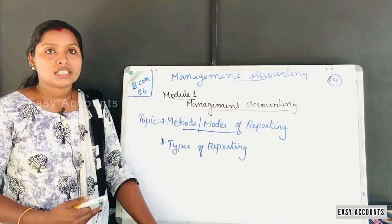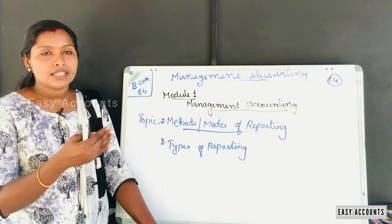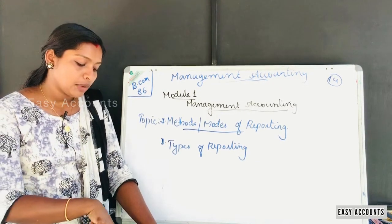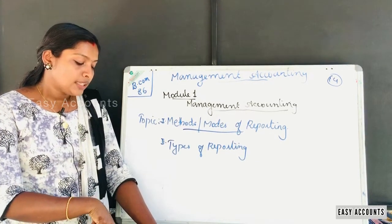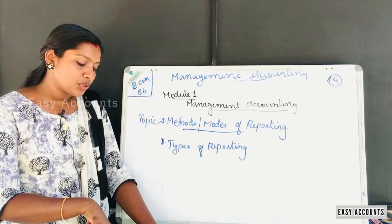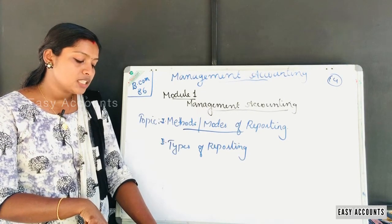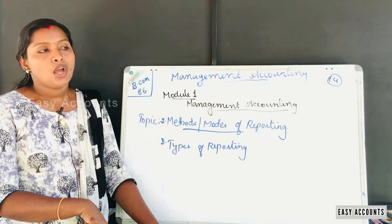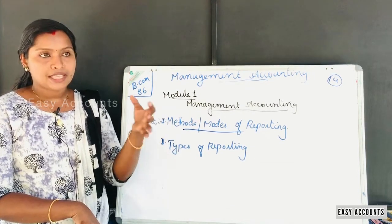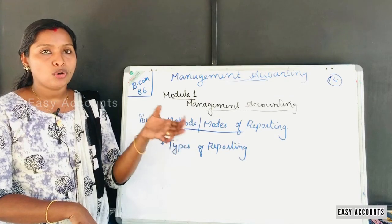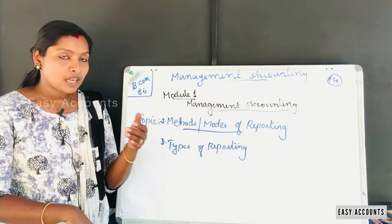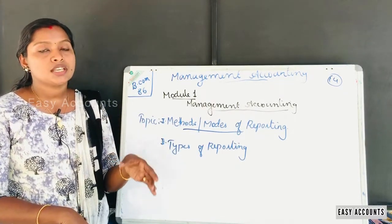Current reports and summary reports: these reports give information about the operational features of a particular functional area and expose the current situation briefly — one particular function such as sales, production, etc. We use the control report to understand the current situation in our business.